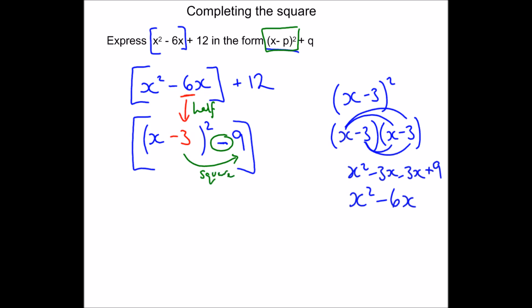On the outside of my square brackets I still have my plus 12. Now I can just tidy this up: I'll get x minus 3 squared, and then my minus 9 and my plus 12 becomes plus 3.